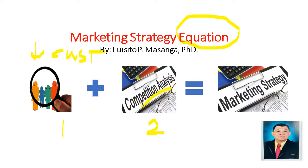Once you have these two data, you can now formulate your marketing strategy. Again, I call this the equation because you need to identify two variables. One is the Customer Analysis, and the other one is the Competitor Analysis, before you can implement your marketing strategy.